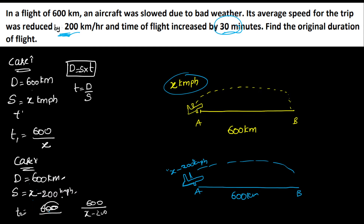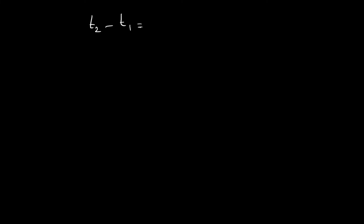The difference in times is half an hour. So t2 minus t1 equals 1/2. That means 600/(x - 200) minus 600/x is equal to 1/2.